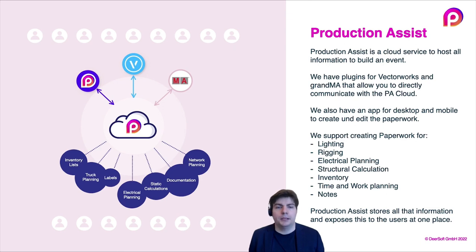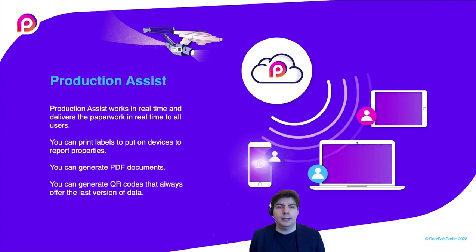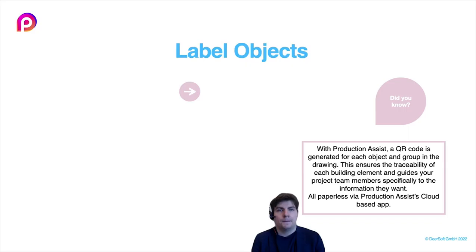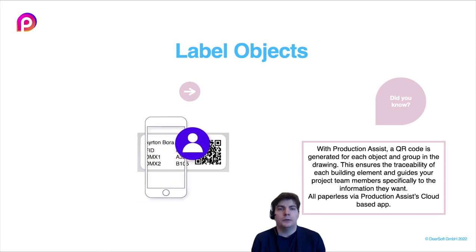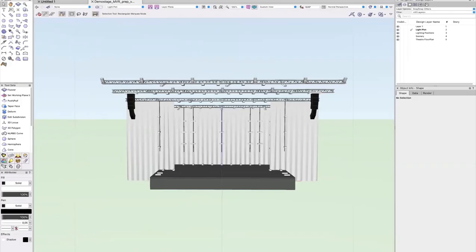Production Assist works in real time — every time a user changes the paperwork, it delivers it automatically to other users. You can use connected devices like phones or tablets to see the paperwork. All reports can be exported to PDF but are marked with a QR code so you can always access the latest version. You can generate labels with QR codes to scan with any device and get all available information. You can also attach a virtual node to an object and share it with your colleagues.